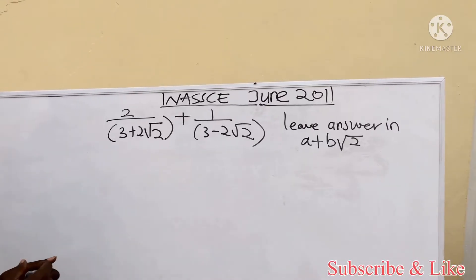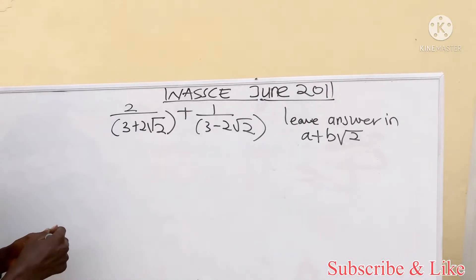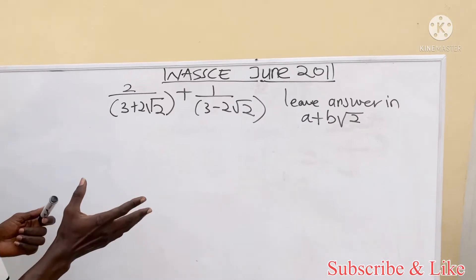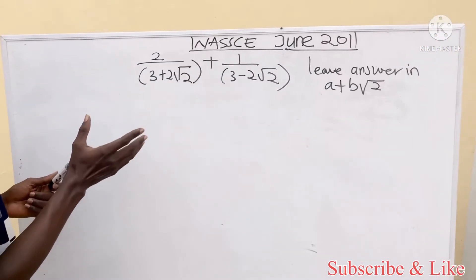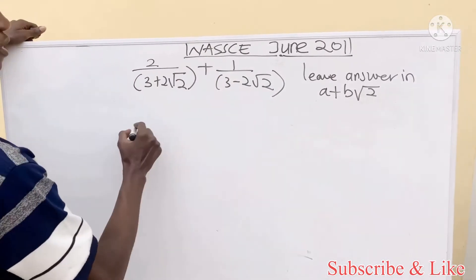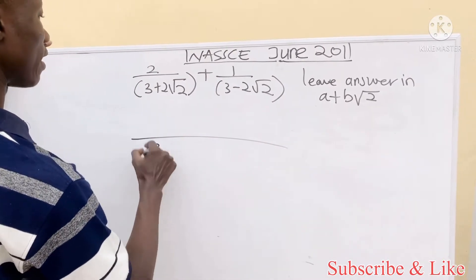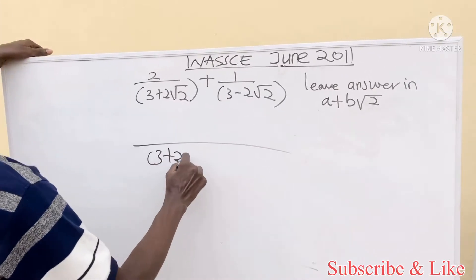Welcome to Math Help. Today we'll be solving a WASSCE June 2011 question. This is a likely WASSCE examination question, so let's go through solving this. First, we find the LCM, which is the base, so root 2 times 3.